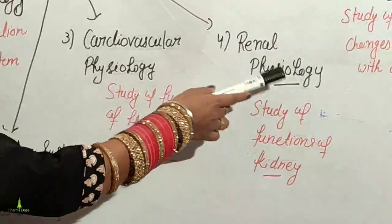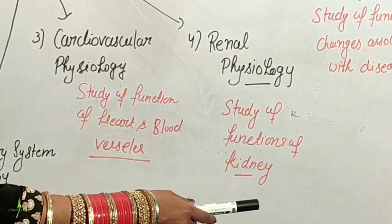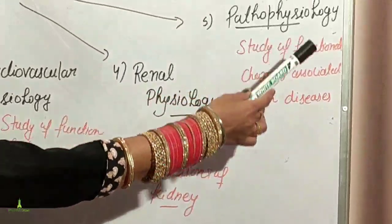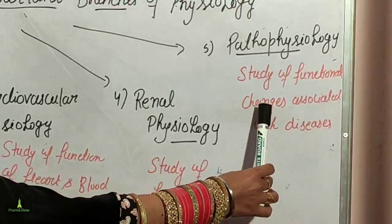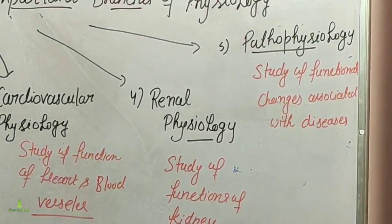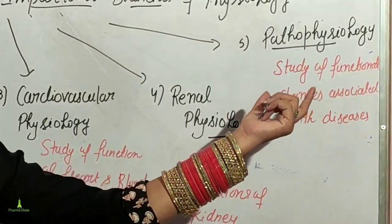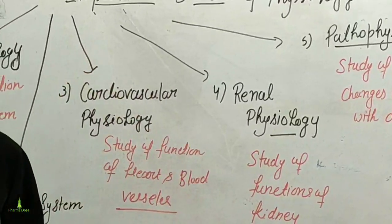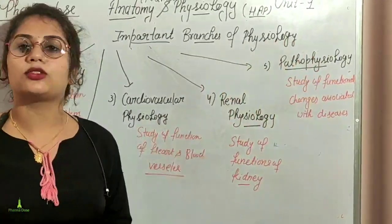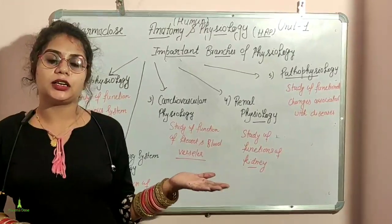Renal Physiology is the study of the function of the kidney, including the nephron and kidney structures. Pathophysiology is the study of functional changes associated with disease — what are the normal body functions and how do they change in diseased states.